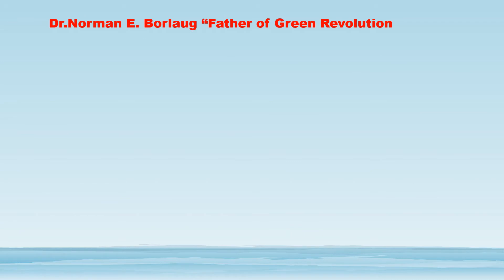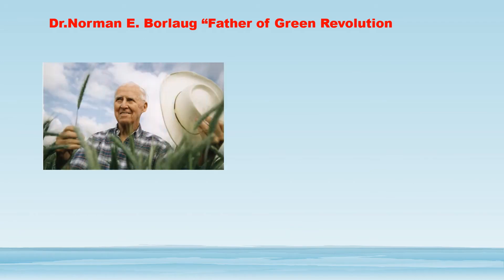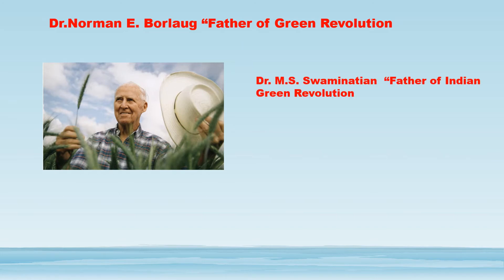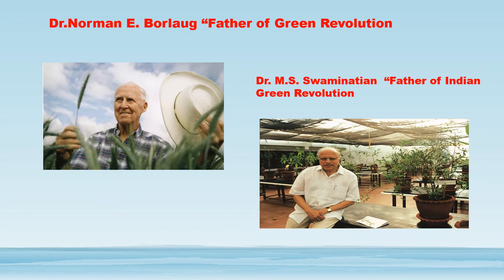Dr. Norman E. Borlaug is the father of Green Revolution. He is an American who got the Nobel Prize in 1970 for the Green Revolution and introduced wheat varieties. Dr. M. Swaminathan — full name Dr. Monkombu Sambasivan Swaminathan — is an Indian scientist known for his leading role in India's Green Revolution. He researched on potato, wheat, rice, and jute. Due to his efforts, wheat production increased from 12 million tons in the 1960s to 70 million tons, making him the father of the Indian Green Revolution.